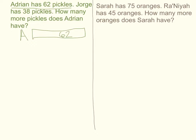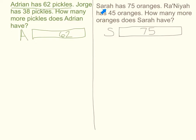Start the video again when you're ready to continue. On your paper, you should have made an S for Sarah, because Sarah has 75 oranges. I'm going to draw this for Sarah. Remember, this image represents Sarah — the first sentence — and her 75 oranges. Oranges are my unit, so don't forget those in your answer.